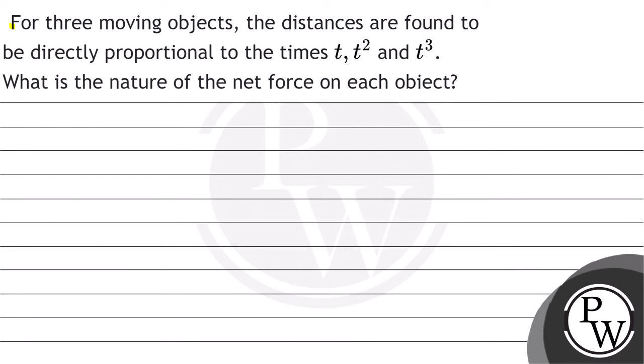The question reads: For three moving objects, the distances are found to be directly proportional to the times t, t square, and t cube. What is the nature of the net force on each object?